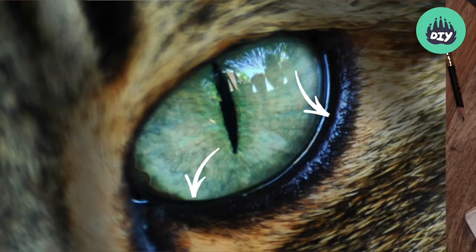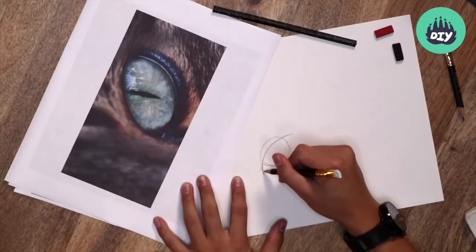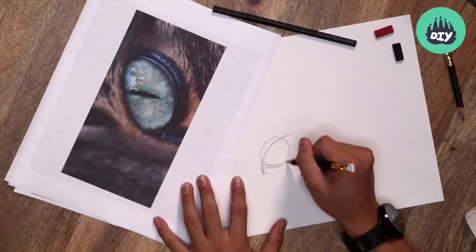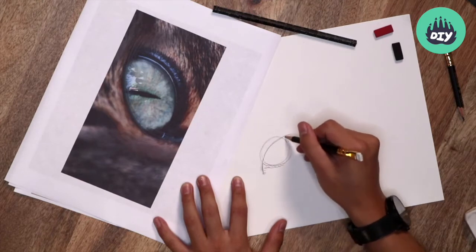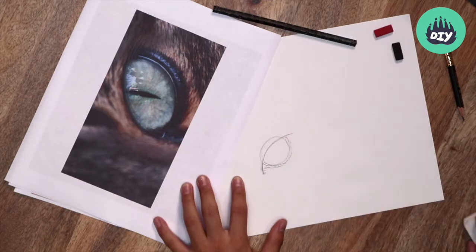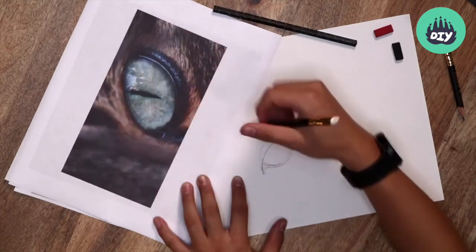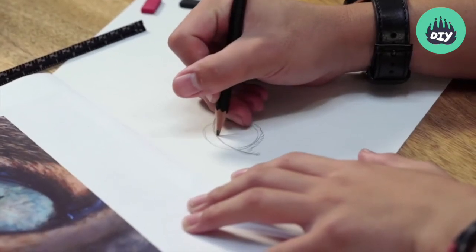And then draw in that black outline just around the eyeball. Kind of like this. And then from there we can draw in the slit of the pupil, which is an angled line that goes something like this.